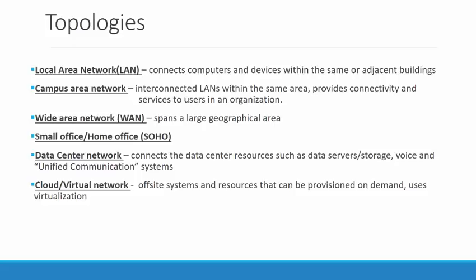A cloud or virtual network consists of off-site systems and resources that can be provisioned on demand — cloud infrastructure, software, or platforms. Part of being the cloud is that we can provision on demand without building up big systems. If a company merges and suddenly has massive server or data storage needs, those can be provisioned over the cloud on demand. This comes with a whole other set of security considerations. For the most part, this course focuses on the campus area network.